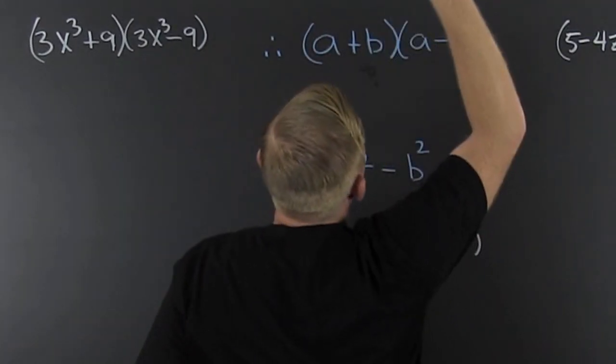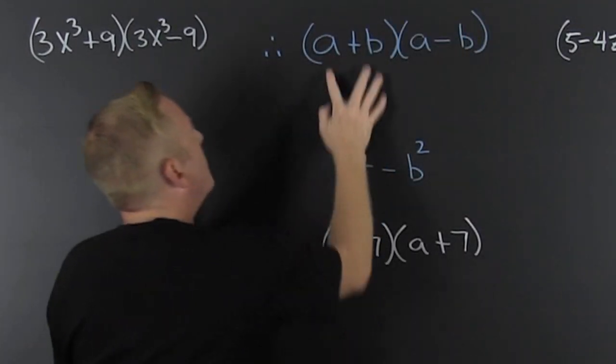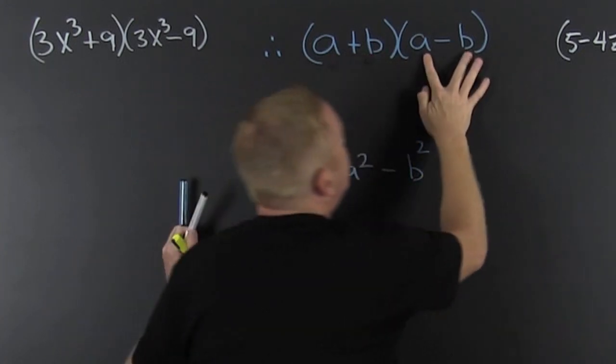I'm talking about these guys right here. We're talking about multiplying out binomials. We got two terms and we got two terms.